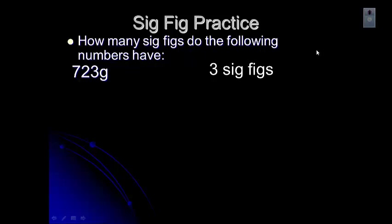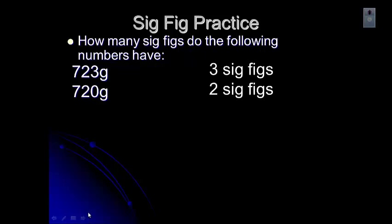Let's try another one. This number actually has two sig figs. That zero is after a non-zero digit, but it's not after a decimal point, and it's not between two significant figures. So that zero is not significant — it's just a placeholder. It tells you about the size of the number, that it's 720 and not 72.